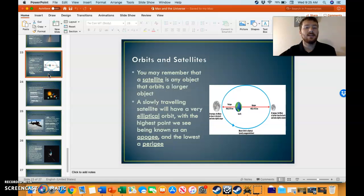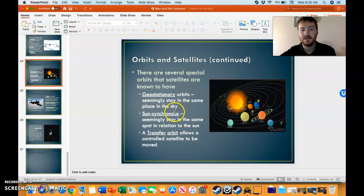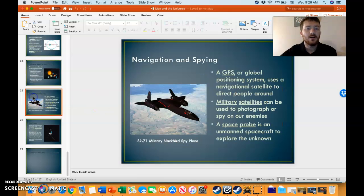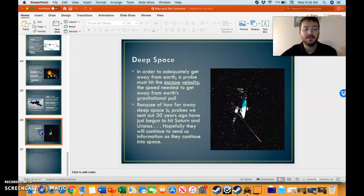Orbits and satellites. Of course, the satellites, any object that orbits another object. There's many different types of orbits. Some are geostationary, they stay in the same place in the sky. Some kind of rotate with the sun. Others are moving about wherever they want. There's different things that we use every day, like GPS and satellites. Like a military satellite can be used to photograph or spy our enemies. This is a Blackbird spy plane. We do have those, they're not just in video games and stuff. And of course, deep space wants to be explored.